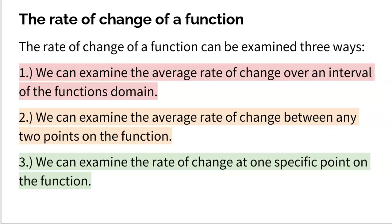To be honest, these first two are essentially the same. Whether you give an interval for your function and you're looking at the rate of change from the beginning of that interval to the end of that interval, that's technically no different than finding the rate of change between two points. You're just labeling one as the beginning point and one as the ending point. So let's talk about those first two — it'll be a separate video for the third one.